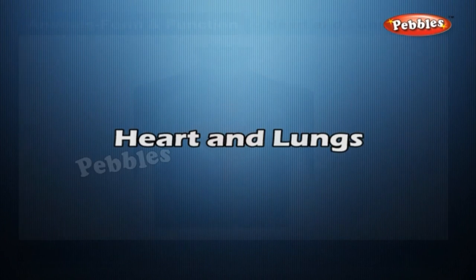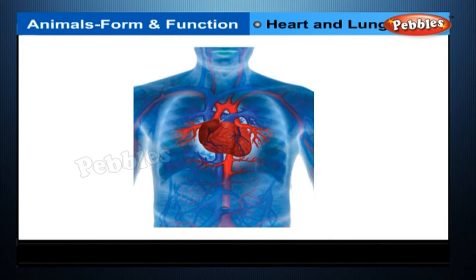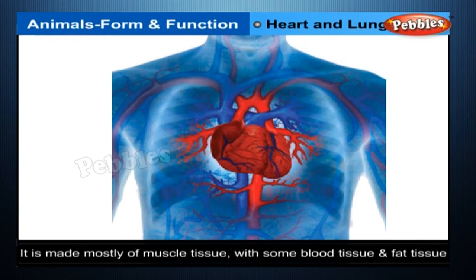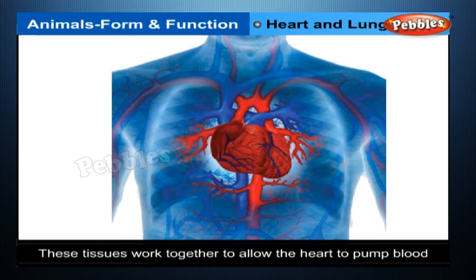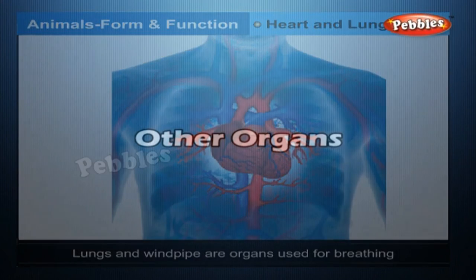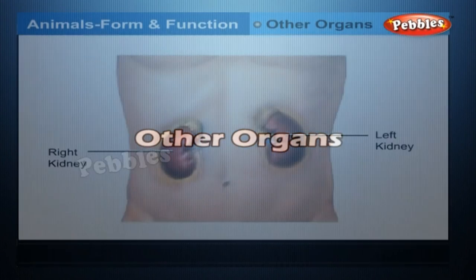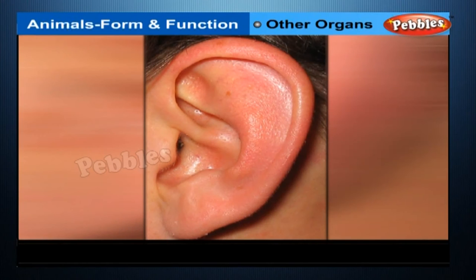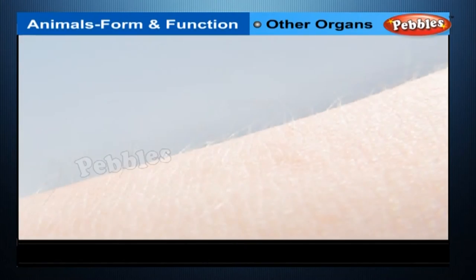Your heart is an organ that pumps blood. It is made mostly of muscle tissue, with some blood tissue and fat tissue. These tissues work together to allow the heart to pump blood. Your lungs and windpipe are organs used for breathing. Kidneys are the organs of excretion, and the ear is a sense organ.